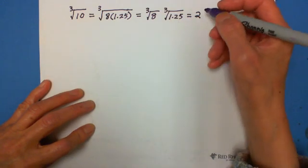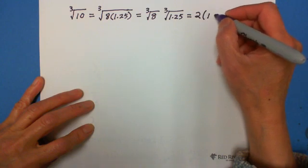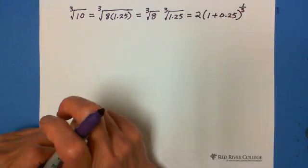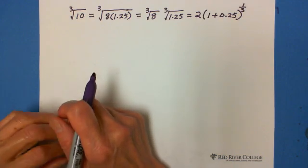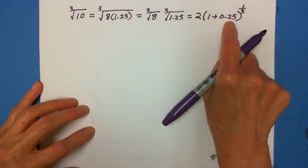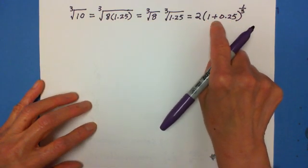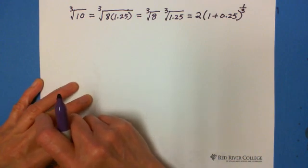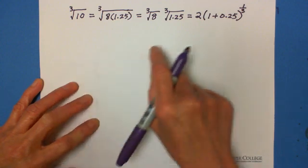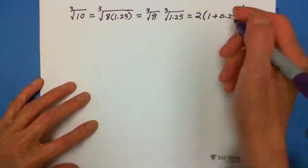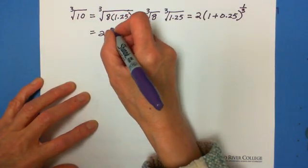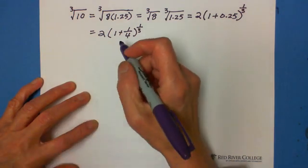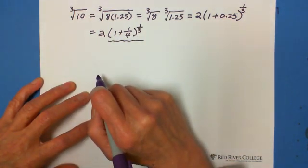And cube root 1.25 we can write as a binomial, which is (1 + 0.25) to the 1/3 exponent. Then we can use the binomial series to expand (1 + 0.25) to the 1/3 exponent and get cube root 10. This can also be written as 2 times (1 + 1/4) to the 1/3 exponent. So now this is the binomial expansion — follow the pattern.